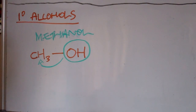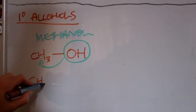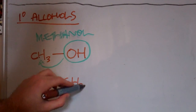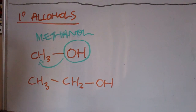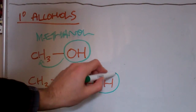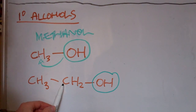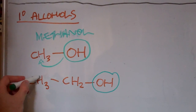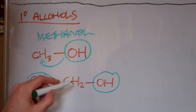Another type of primary alcohol would be ethanol, drawn this way — ethanol. We've got two carbons in the alcohol chain, so it's ethanol, and the hydroxyl group is here. The carbon that it's connected to is bonded to one other alkyl group, which is this one here — one alkyl group. This is also a primary alcohol.